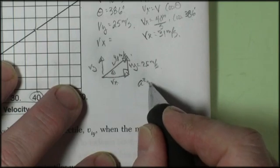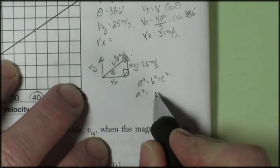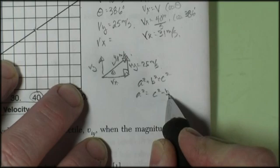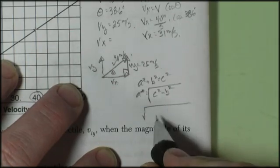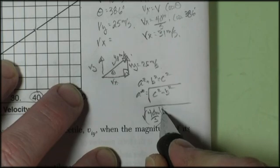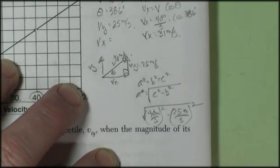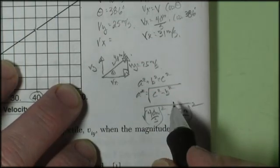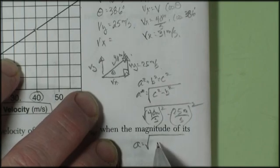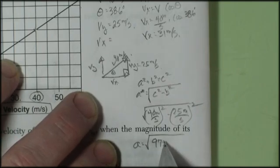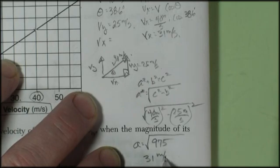So I could just use Pythagorean theorem, where it tells me that a² + b² = c². Which means a² = c² - b², and a would be equal to the square root of c² - b². So that would be the square root of 40 meters per second squared minus 25 meters per second squared. I plug that into the calculator. That's the square root of 975. And if I hit my square root button, I come up with 31 meters per second.